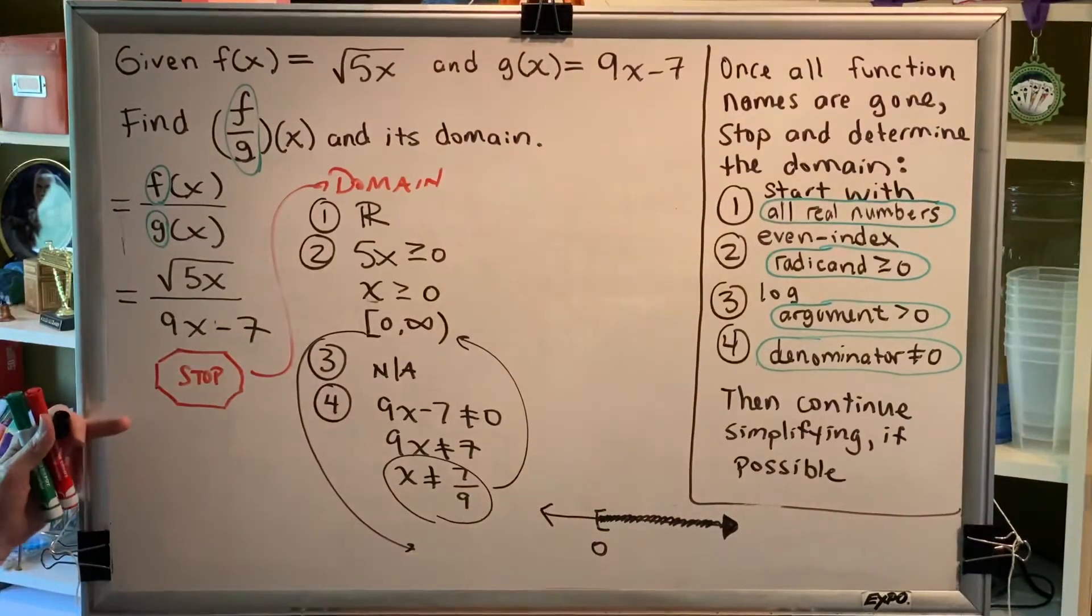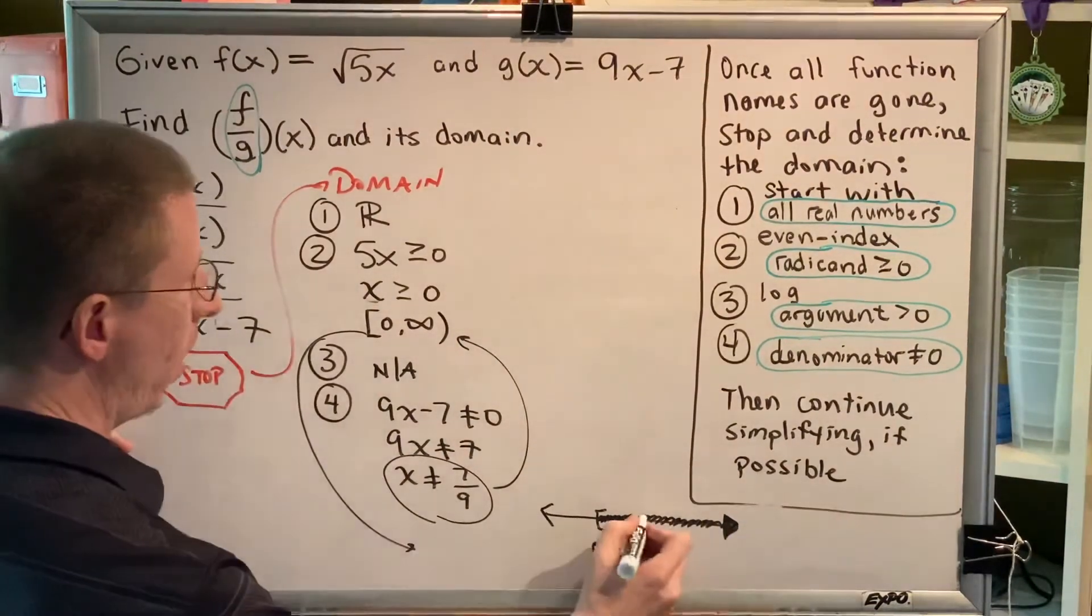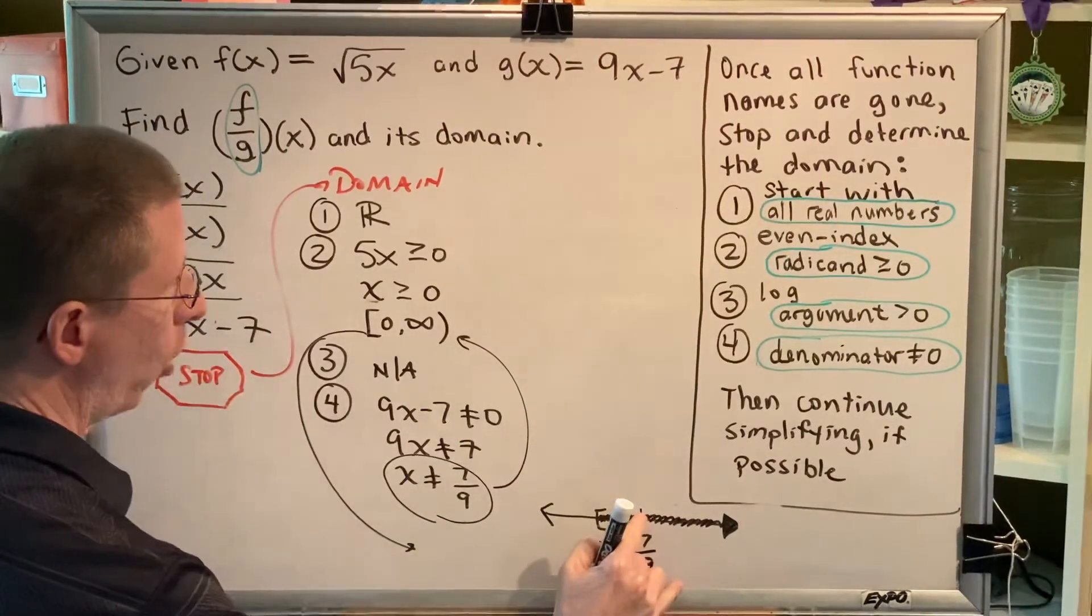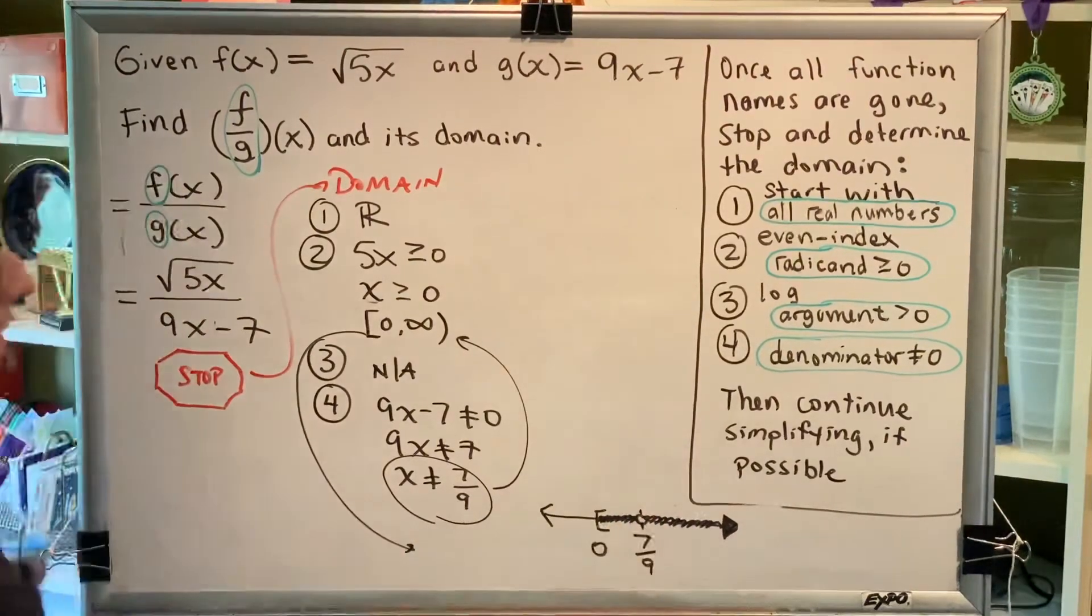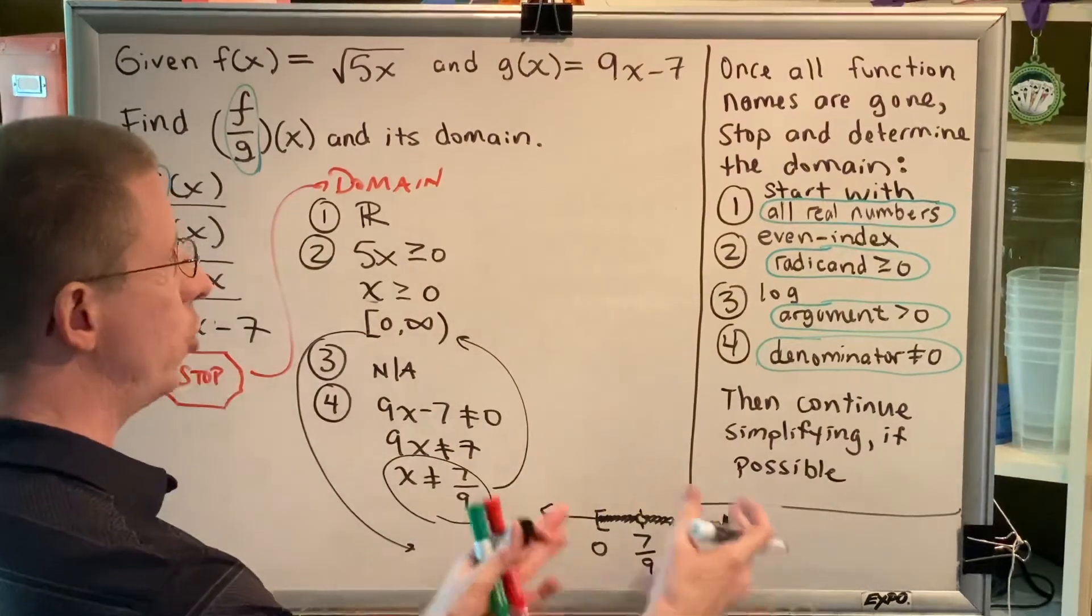All numbers that were zero or larger. But now we have to remove the number seven ninths, which is a positive number, which means it's somewhere in here. So we need to introduce a hole on our number line to skip over the number seven ninths.